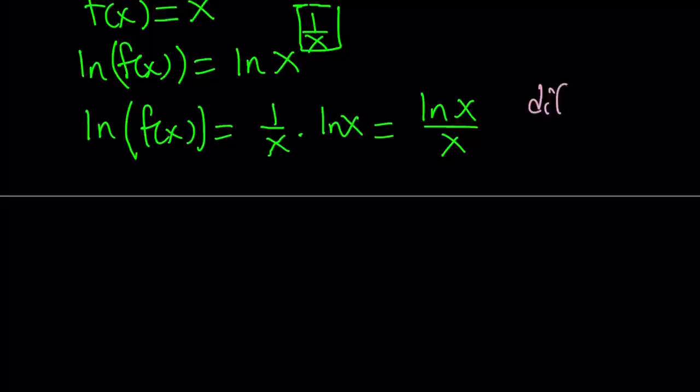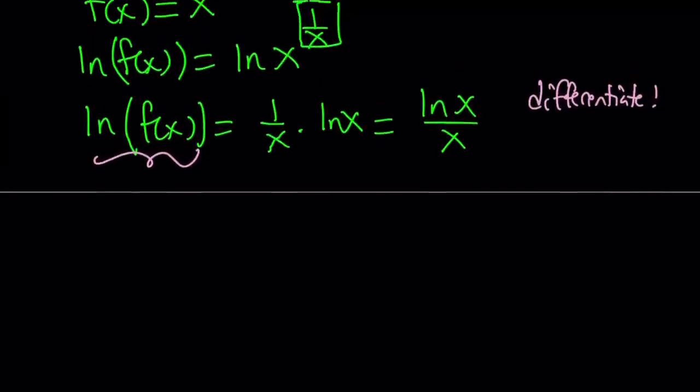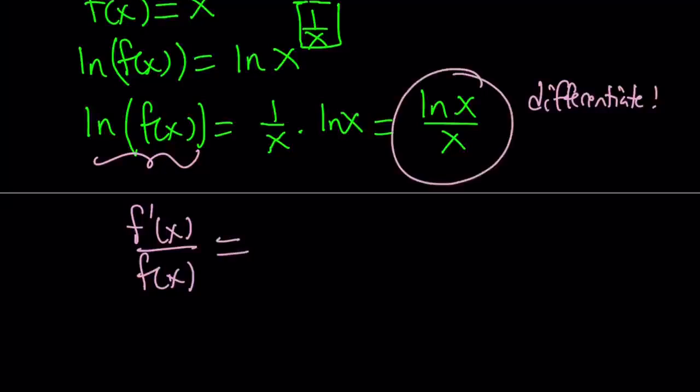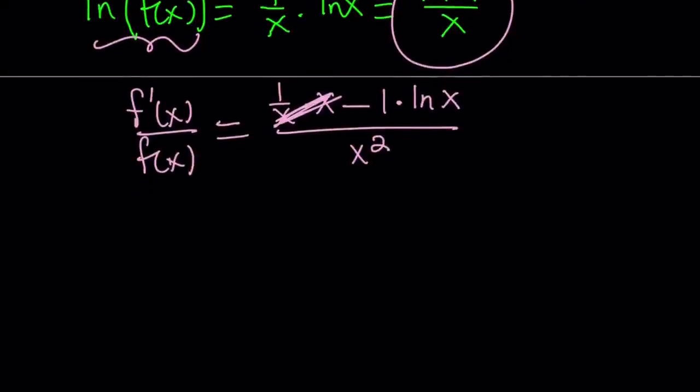At this point, let's go ahead and differentiate both sides. When you differentiate the ln function, the derivative of ln u is u prime divided by u. So this is going to be f prime of x divided by f of x. And on the right-hand side, we can use the quotient rule: the derivative of ln x multiplied by x minus the derivative of x, which is 1, multiplied by ln x, and all of that is going to be divided by the denominator squared.